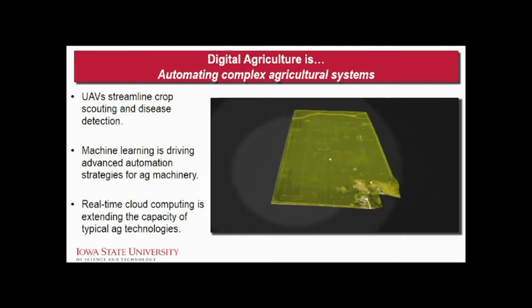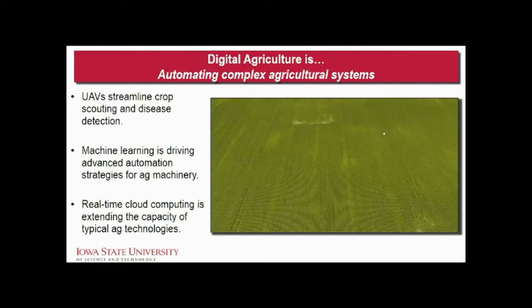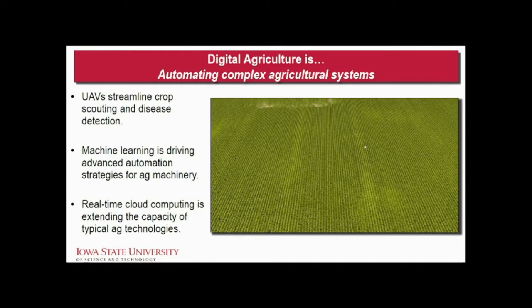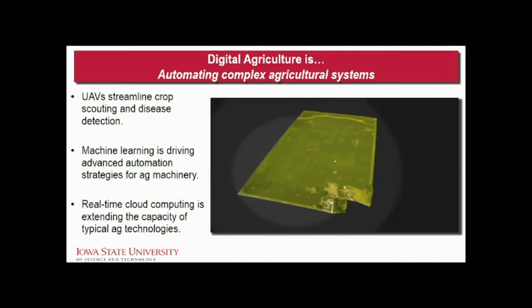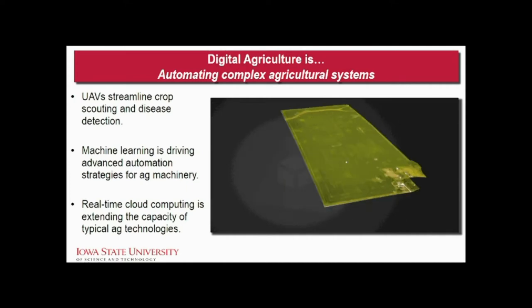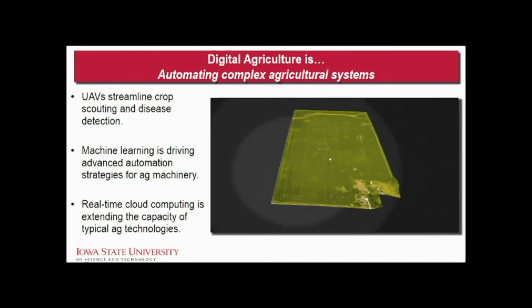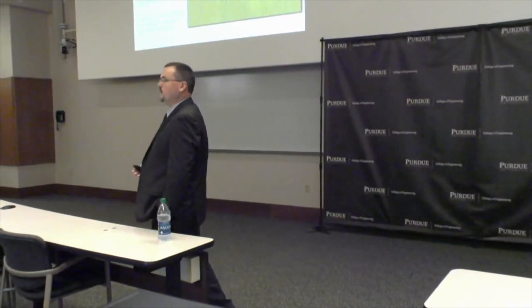Machine learning and data science are getting embedded into the majority of our ag machines to make them smarter. In agriculture, one of the biggest challenges in automation is dealing with the environment — weather changes, crop condition shifts, soil moisture. Machine learning is opening up those opportunities and making us ask: for undergraduate students, what's the minimum amount of data science they really need to understand to be a professional engineer? It's no longer a field unique to itself — it's a complementary part of all engineering and all sciences.